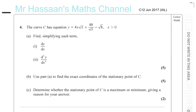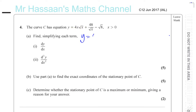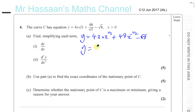First, let's get this ready to be differentiated by writing the powers in index form and as numerators. We have 4x times x to the power of a half, plus 48 over x to the power of a half, which becomes 48 times x to the power of minus a half. The square root of 8 we can leave as it is since it's a constant and will become 0 when differentiated.